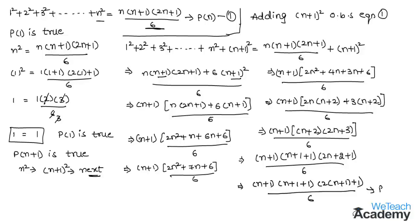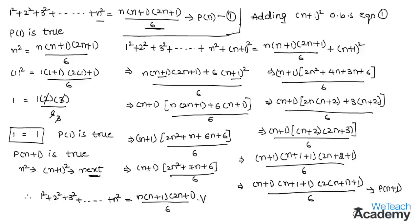Therefore we conclude that the sum of the squares of natural numbers 1² + 2² + 3² + ... + n² = n(n+1)(2n+1)/6 for all n belonging to natural numbers. This completes the proof by mathematical induction. Hope you understood the concept. Do like and subscribe to WeTeachAcademy.com. Thanks for watching. Have a nice day.